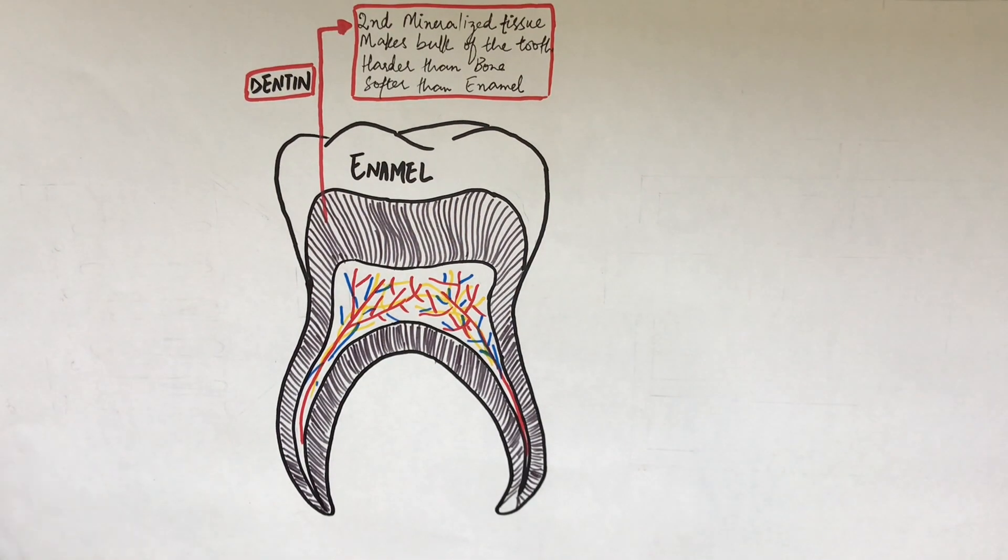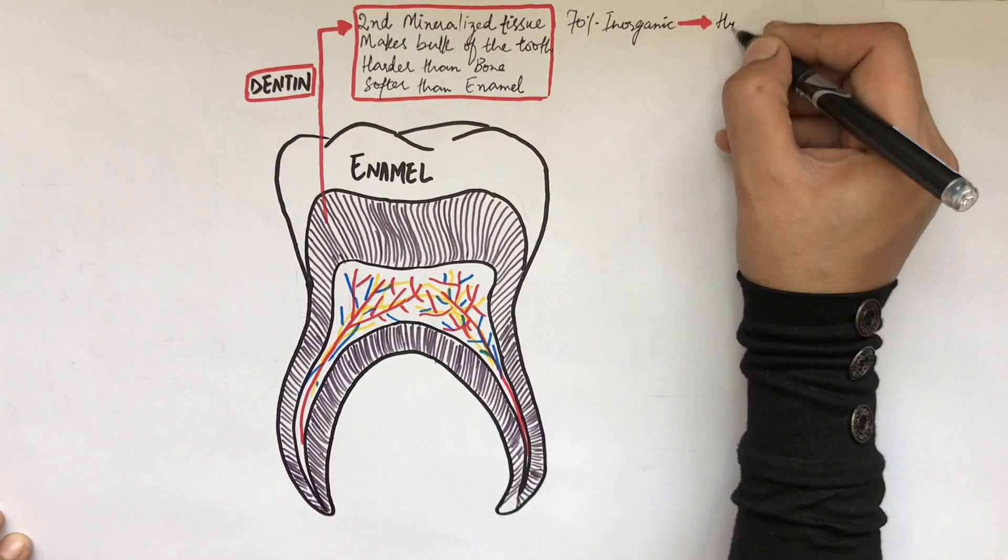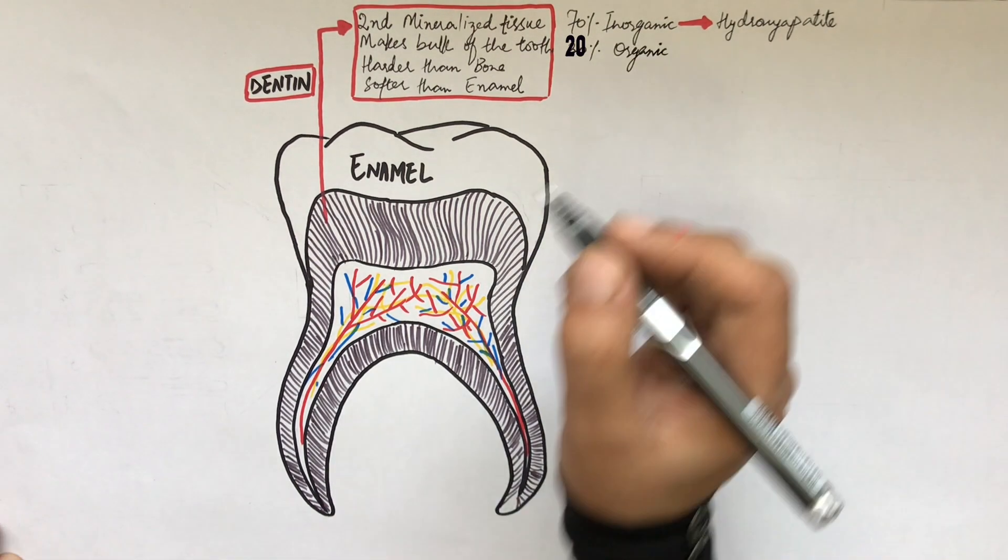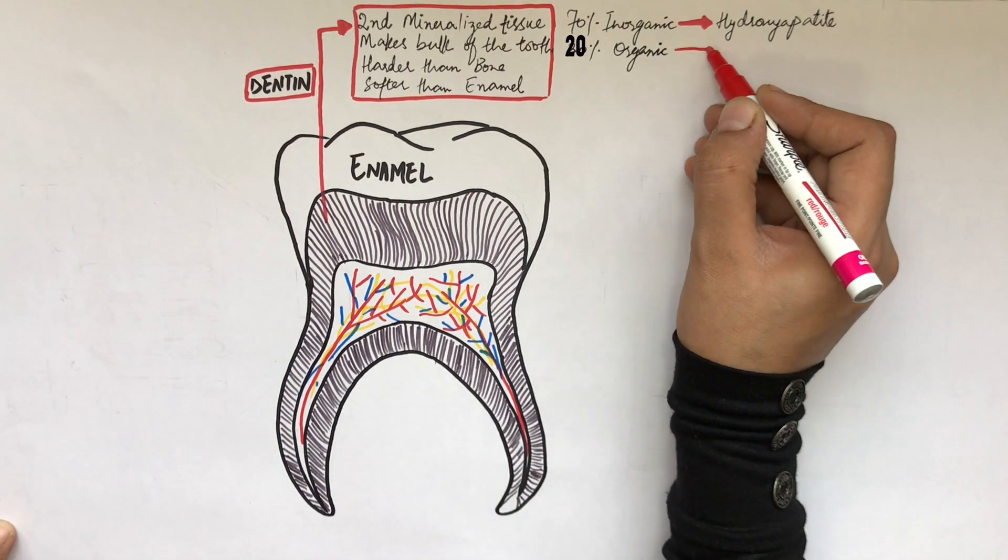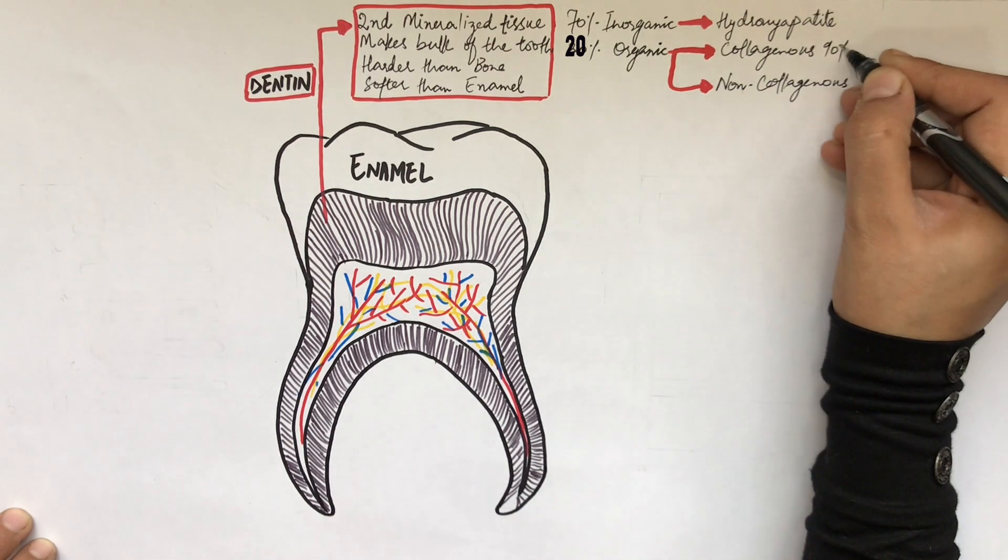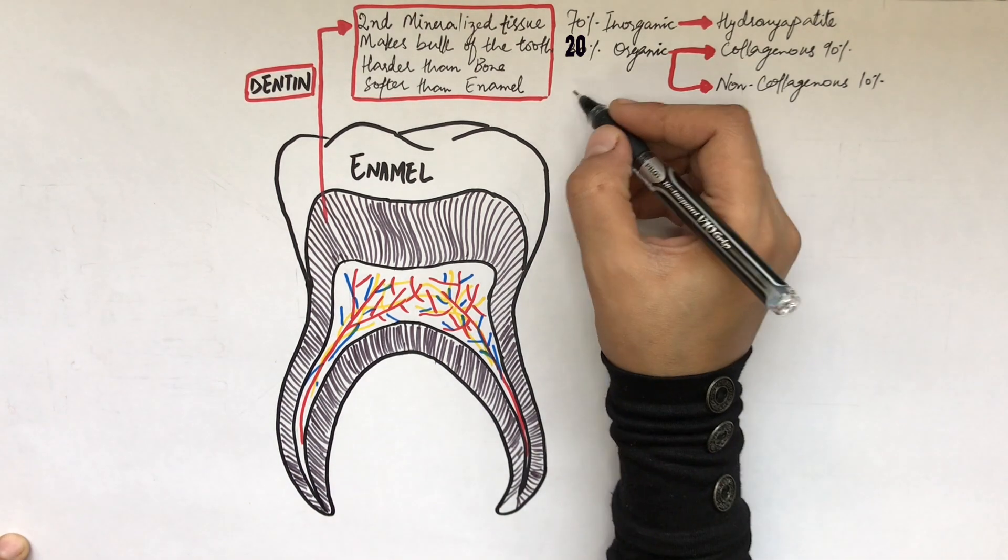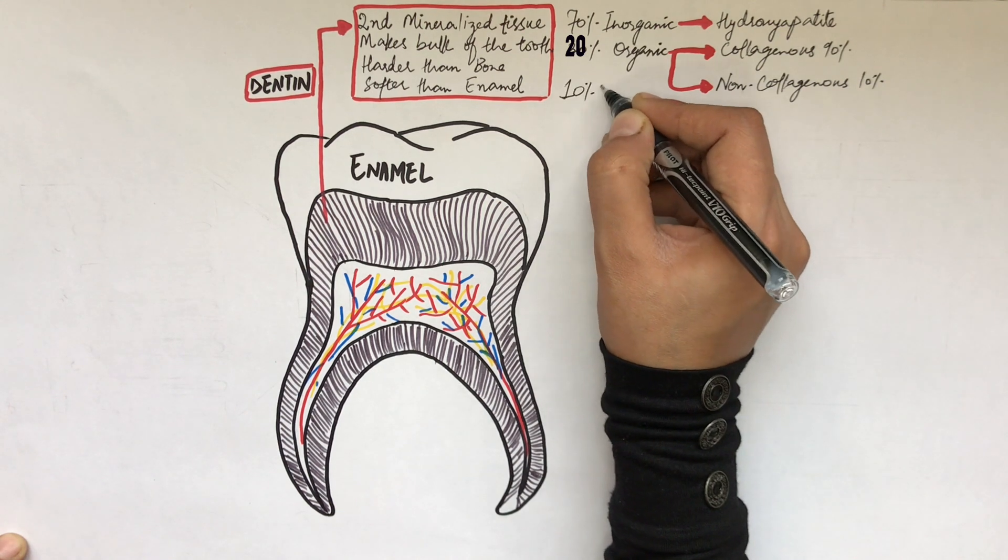It's made up of 70% inorganic material, that is hydroxyapatite crystals, and 20% organic material. The collagenous and non-collagenous proteins contribute to its organic part, with the collagenous proteins making up 90% of its organic part and the non-collagenous proteins making up only 10%. Also note that the remaining 10% of dentine is made up of water.